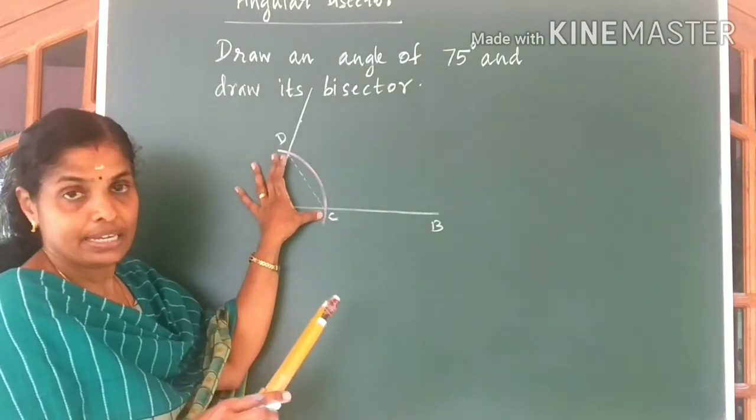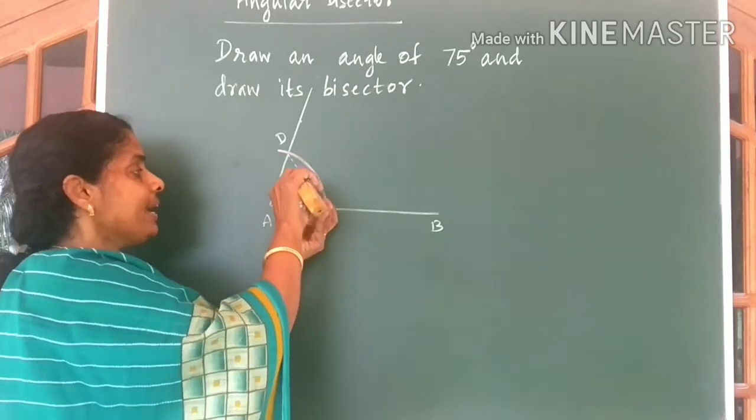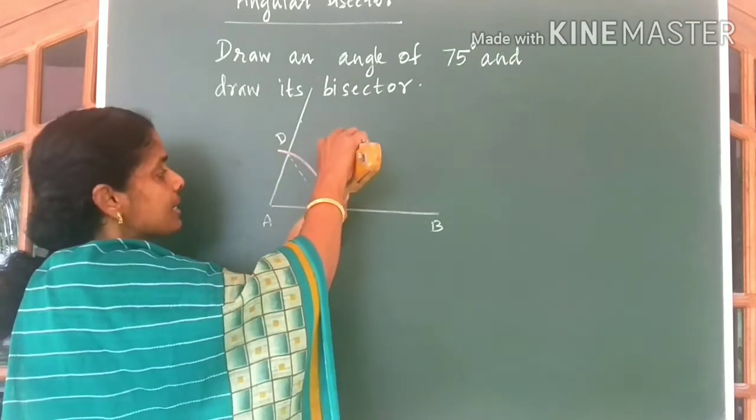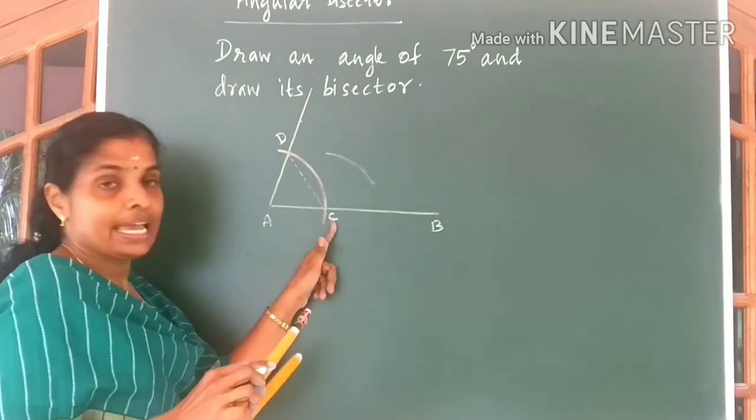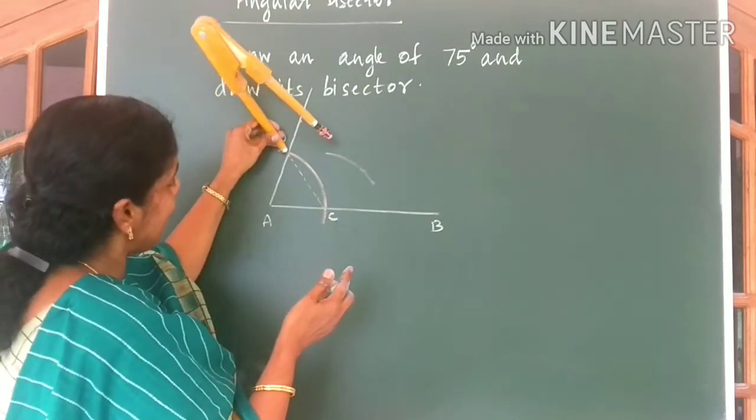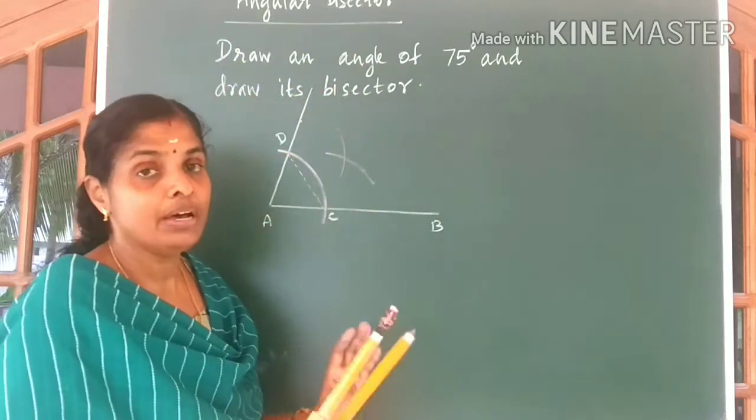CD is the line, isn't it? So keep your compass at C, half more than this line. Draw arcs. So here I am drawing an arc with C as center. Now keep your compass at D and draw one more arc with the same radius.